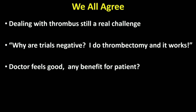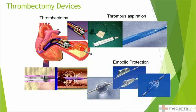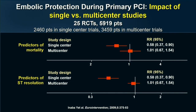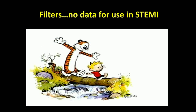We all agree thrombus is a problem. What about the mechanical parts? Why are all the trials negative? Thrombectomy works — it feels good — but is there any benefit for patients? Looking at mechanical devices: embolic protection and passive and active thrombus aspiration. For embolic protection, there is absolutely no benefit shown in multi-center trials. There's no data supporting embolic protection at all, although on a case-by-case basis — a very large ectatic right coronary, for instance — it might still be helpful.